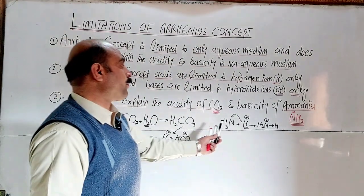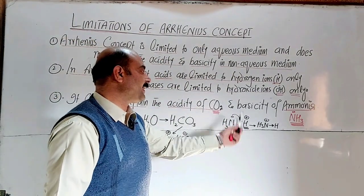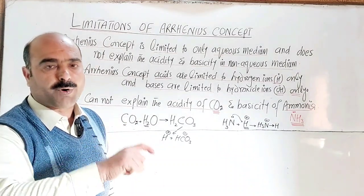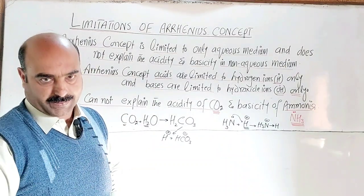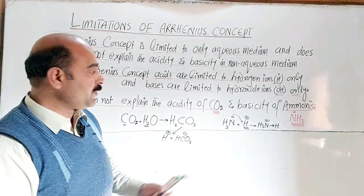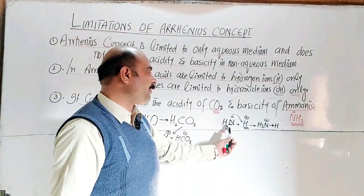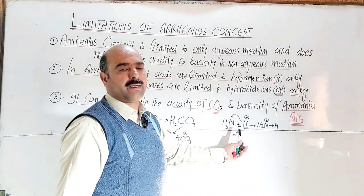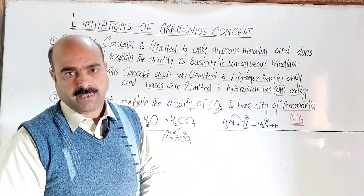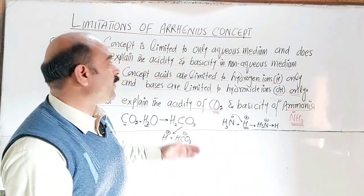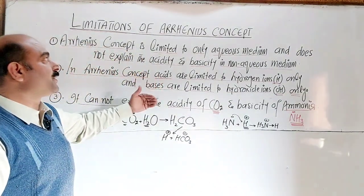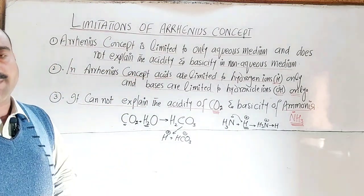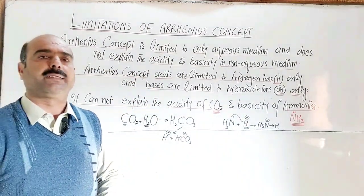The proton-acceptor species is known as a base according to the Bronsted-Lowry concept. So these were the limitations of the Arrhenius concept about acids and bases.